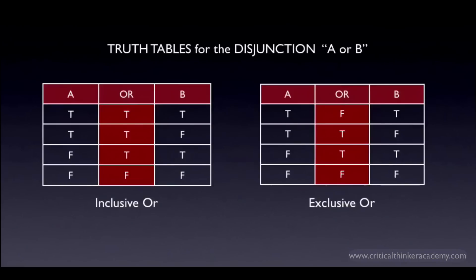You're using an exclusive or when you say things like: the dice rolled either a six or a two, or the door is either open or shut, or I'm either pregnant or I'm not pregnant, or I either passed the course or I failed the course. On the other hand, if a psychic predicts that you will come into some money or meet a significant new person in the next month, that's probably an inclusive or, since they're probably not excluding the possibility that both might happen. But sometimes it's hard to know whether an or is intended to be inclusive or exclusive, and in those cases you might need to ask for clarification if an argument turns on how you read the or.